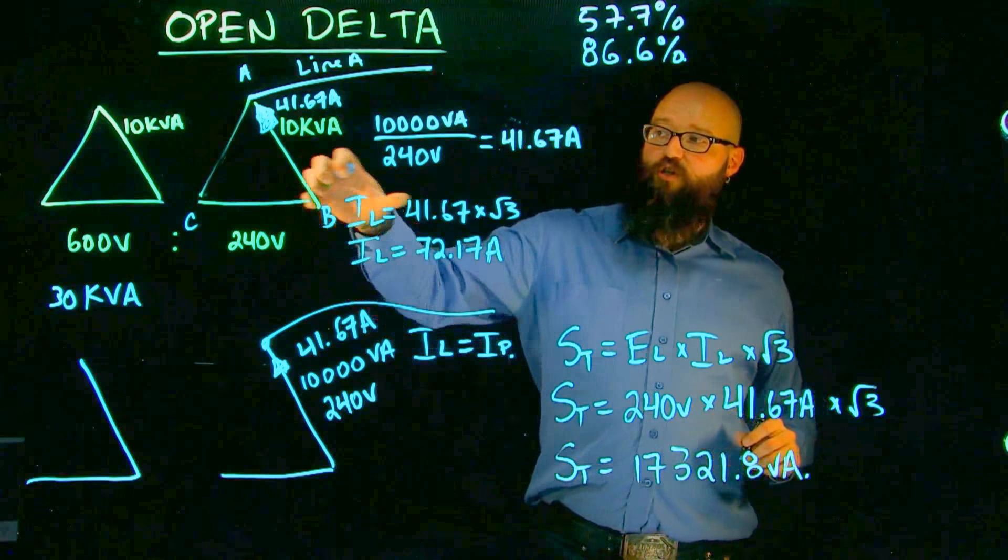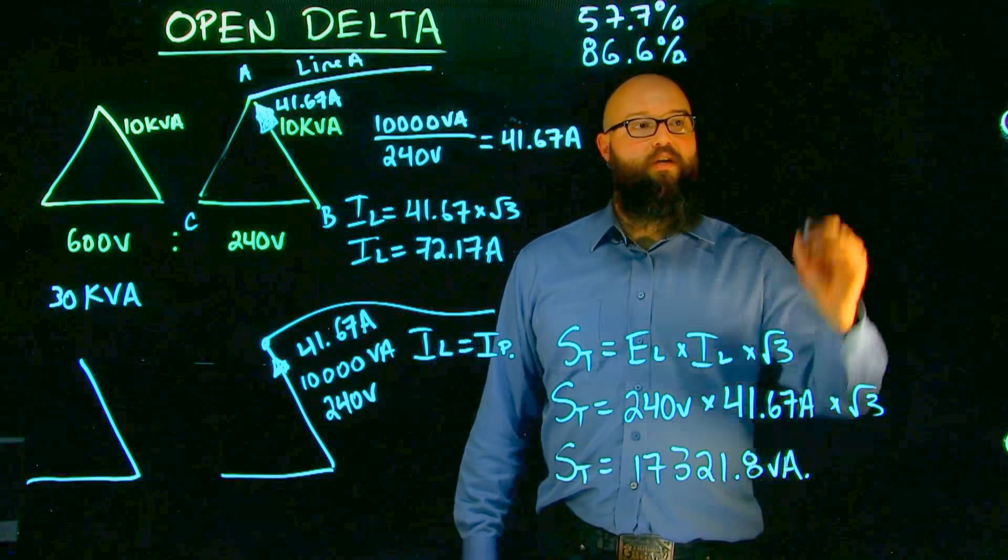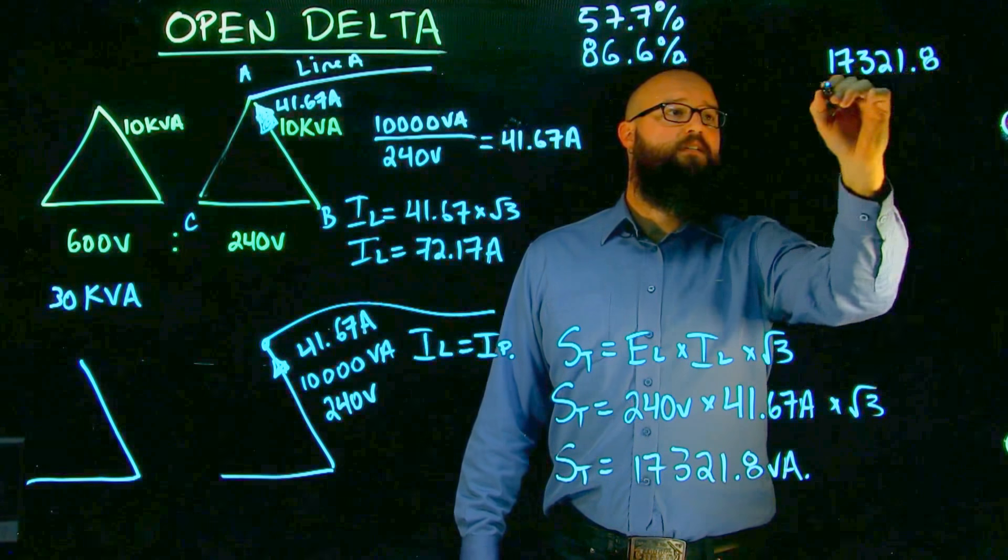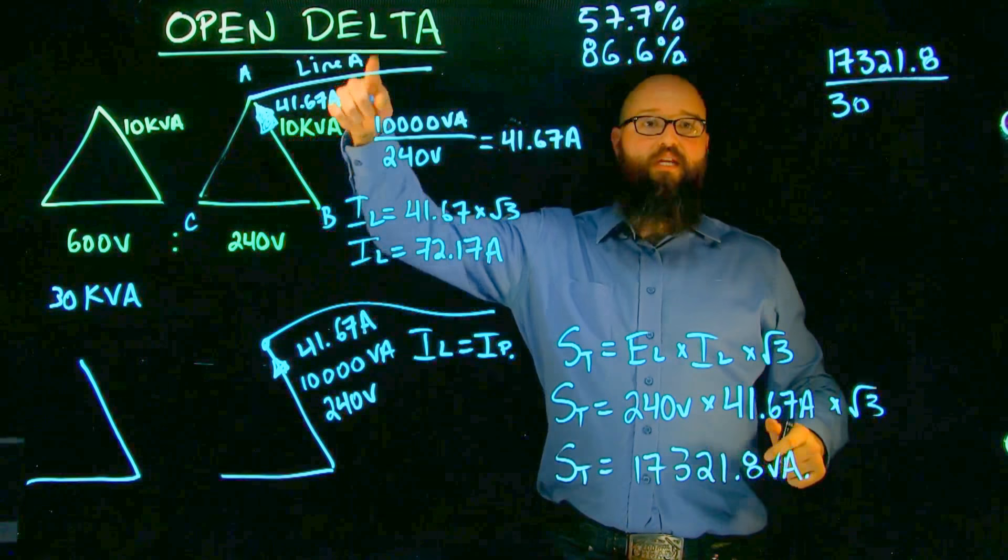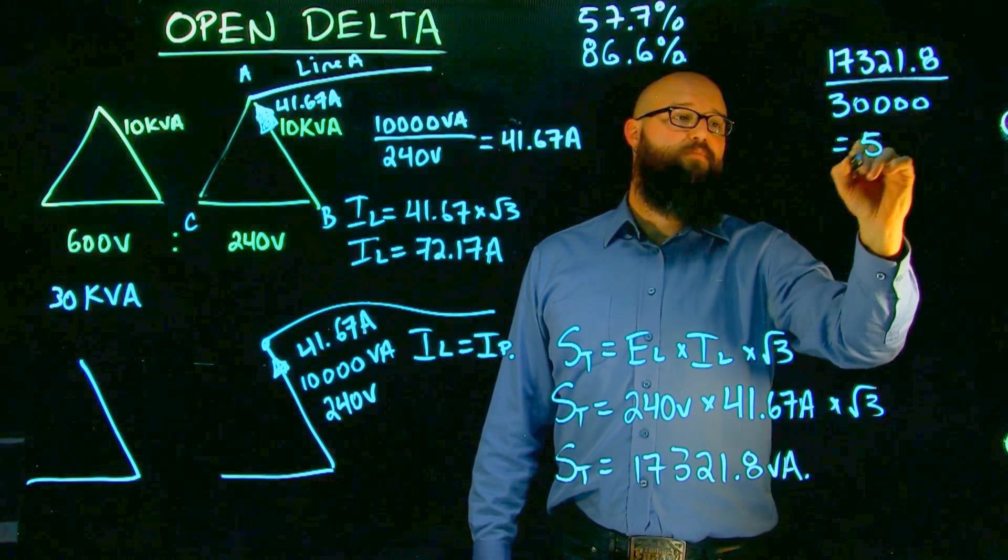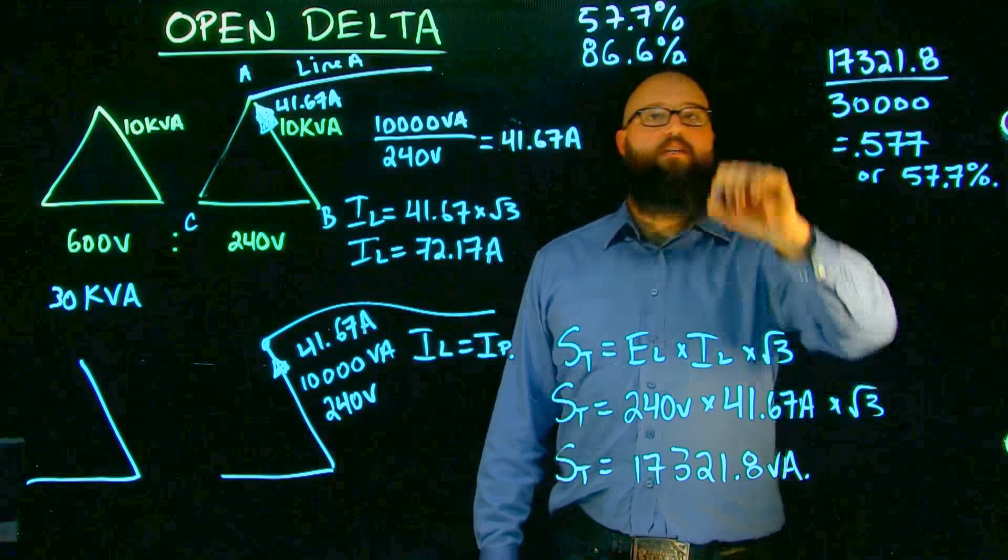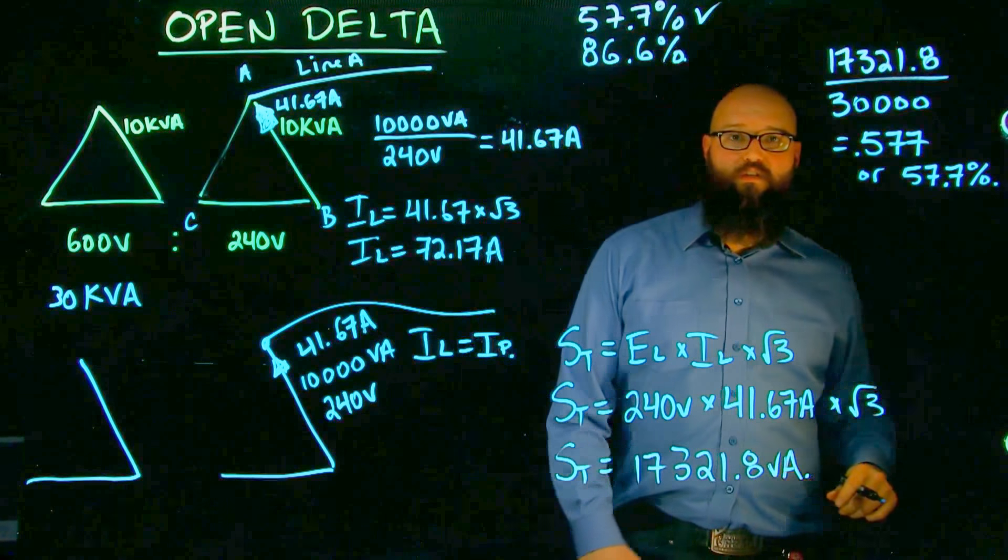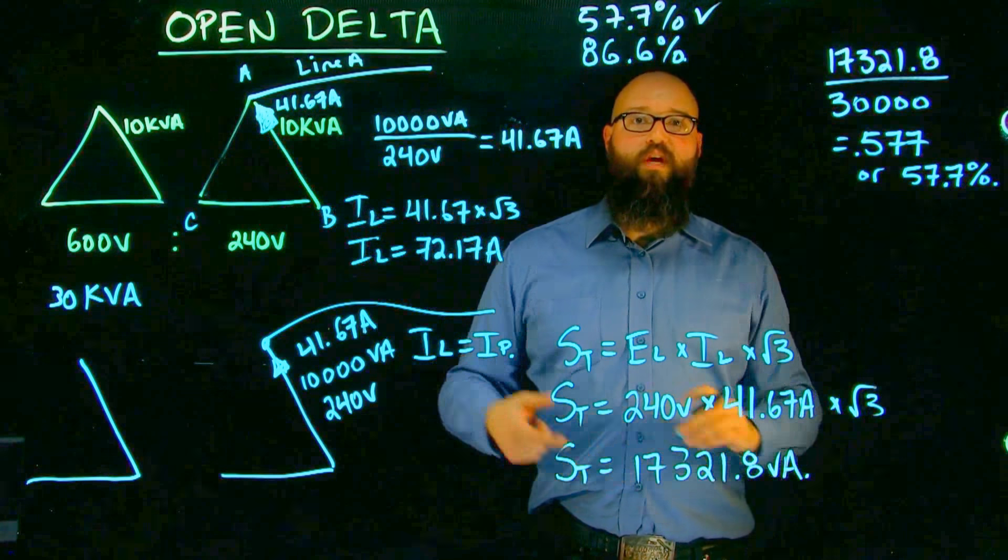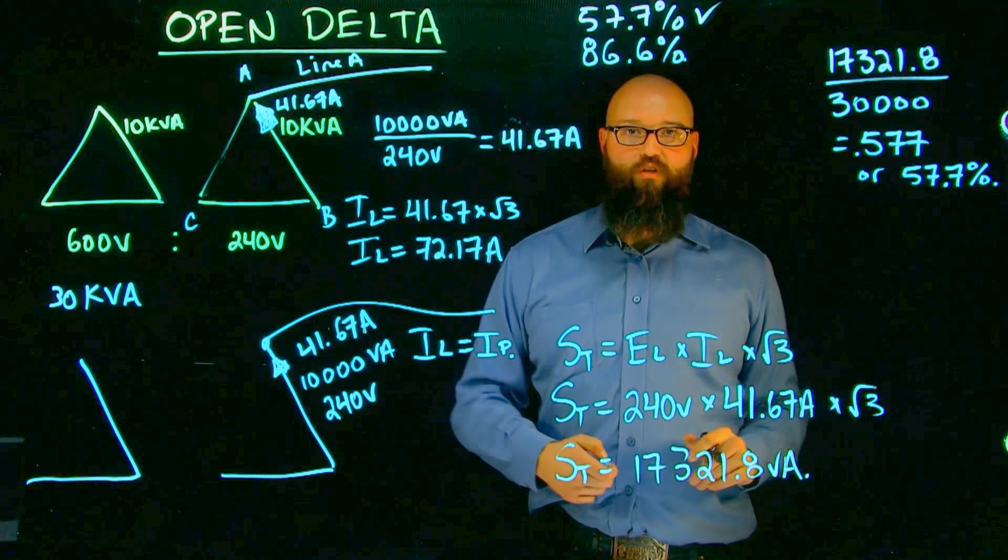Okay, now let's look at those numbers. Originally, these three phases, this was a 30,000 VA output. And if we look at this number, 17,321.8 divided by our original three 10 kVA transformers of 30,000, we end up at 0.577 or 57.7%. There's our first percentage. Okay, that's when we compare it to those three coils, what they would have originally put out compared to what they're putting out now is reduced to 57.7% of what it originally was.